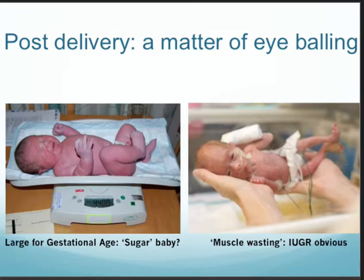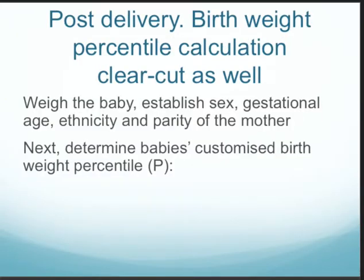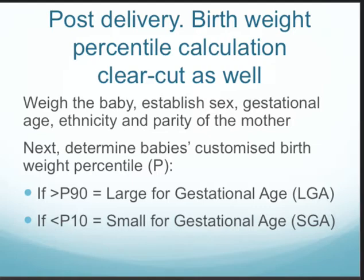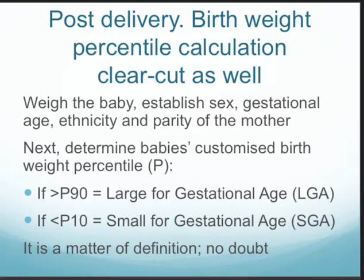In contrast, the baby on the right is not only preterm but shows obvious muscle wasting with a typical old man's facial expression — clearly an IUGR baby. Post-delivery, we simply weigh the baby, establish the baby's sex, gestational age at birth, ethnicity, and parity of the mother, then determine the customized birth weight percentile. Per definition, above the 90th centile is large for gestational age, and below the 10th percentile is small for gestational age.